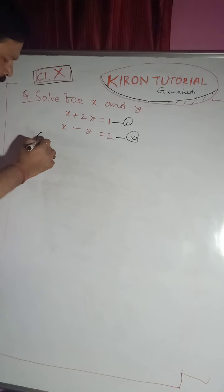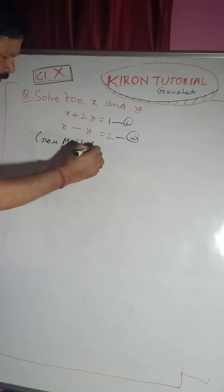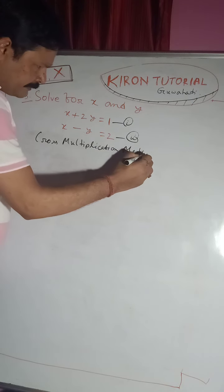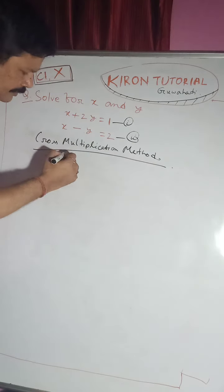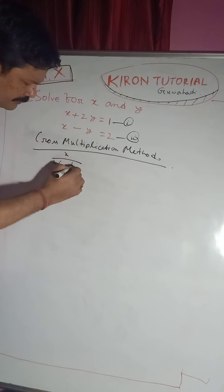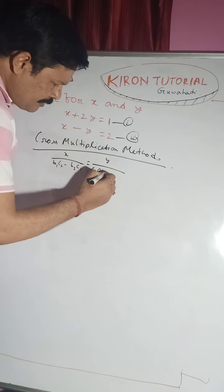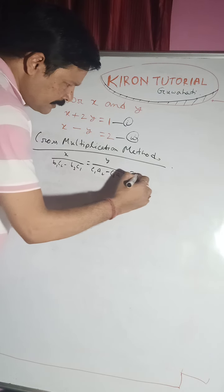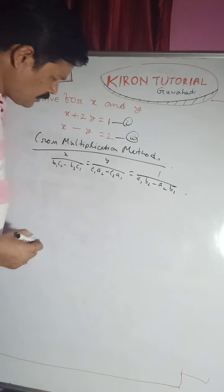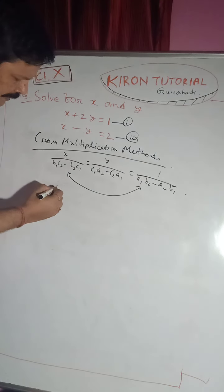There is another method called the cross multiplication method. Here you have to remember the formula: x by (b1·c2 minus b2·c1) equals y by (c1·a2 minus c2·a1) equals 1 by (a1·b2 minus a2·b1).